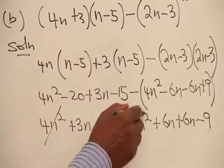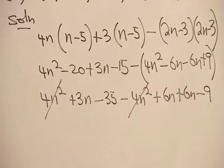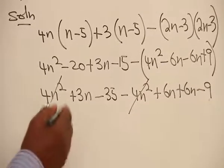4n squared and 4n squared will go. Plus 4 minus 4 is 0. Now, let's collect the terms with n together.